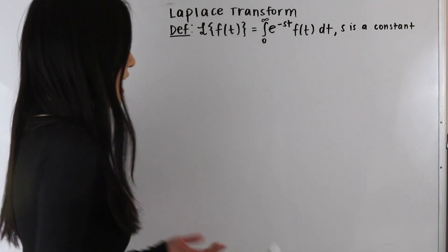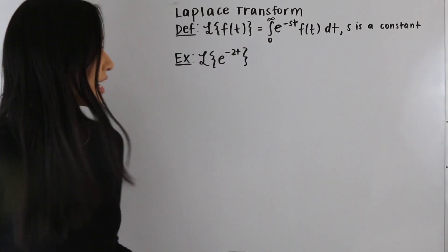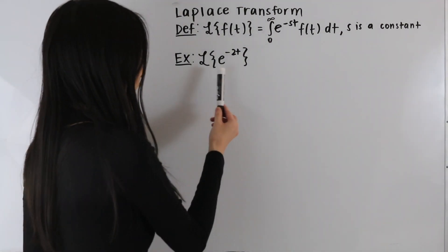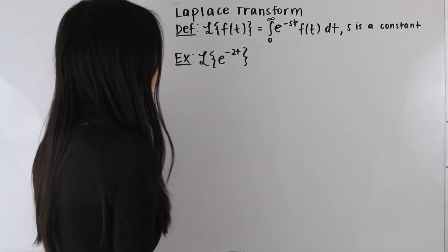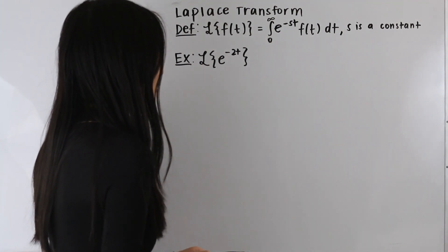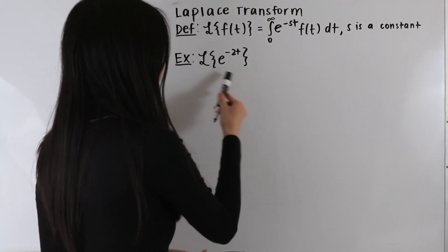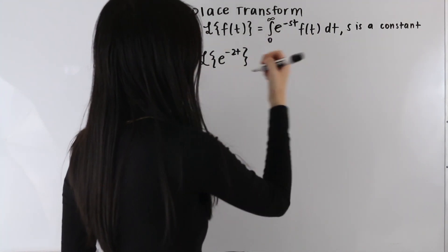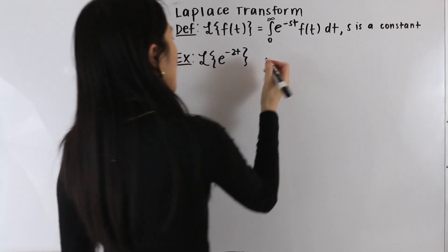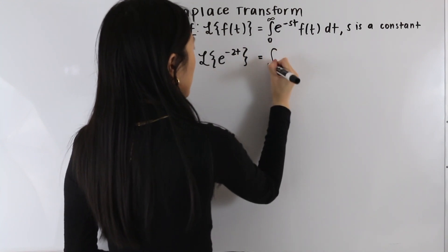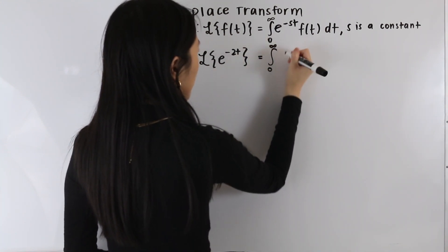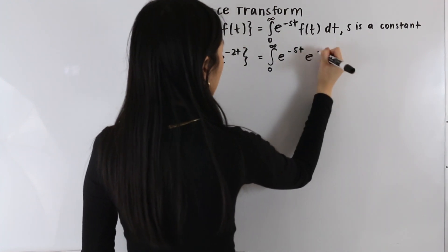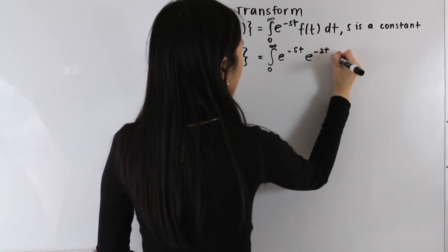So let's go ahead and take a look at some examples. In our first example, we have the Laplace transform of the function e to the negative 2t. Let's start by plugging in e to the negative 2t in for f of t in our definition, so we end up with the integral from zero to infinity of e to the negative st times e to the negative 2t dt.